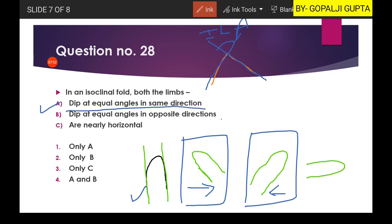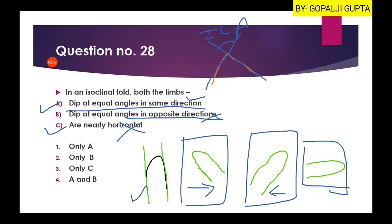Statement B is saying dip at equal angle in opposite direction - this is wrong. And are nearly horizontal - this is also wrong. They can be horizontal in some cases, but they are in same direction always in each and every case. So finally first option will be our right answer.